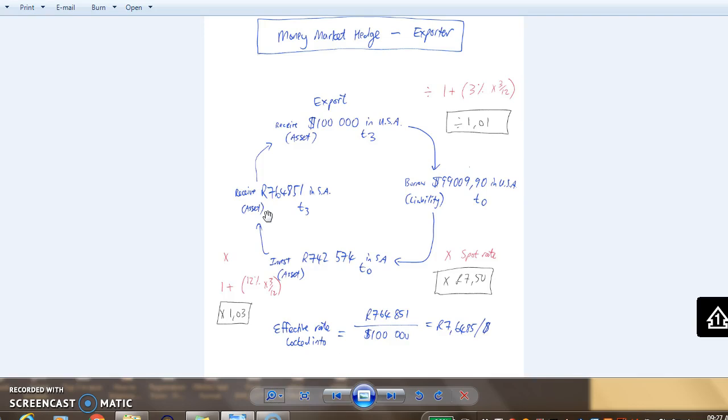The effective rate in the end will be the amount we receive from our South African asset divided by the transaction amount of $100,000 US dollars. That's R7.6485 per dollar.